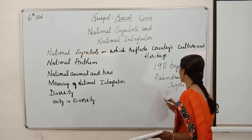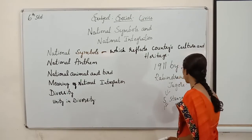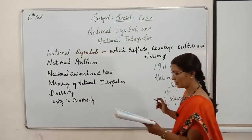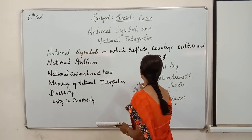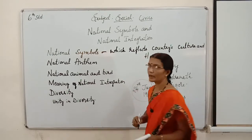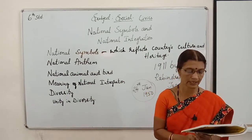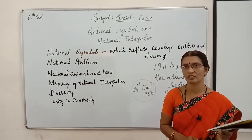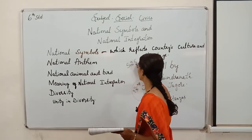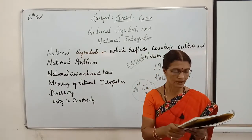The National Anthem contains 5 stanzas, and it was adopted on 24th January 1950 by our Constituent Assembly. It requires 52 seconds to sing the National Anthem correctly. That is the correct measure to sing the National Anthem.